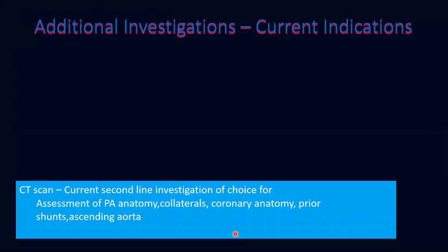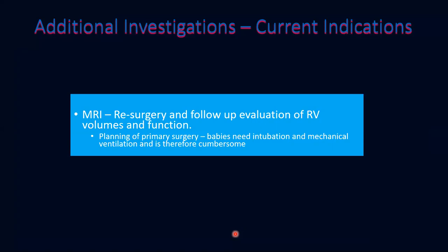CT is the current second-line investigation of choice. Any information not obtainable from echocardiography should be sought with CT. Indications for CT include assessment of pulmonary artery anatomy, looking for collaterals, coronary anatomy, prior shunts, and the ascending aorta. MRI is not preferred as a preoperative investigation for first-stage surgery because babies require intubation and mechanical ventilation. MRI is used when planning re-surgeries and for follow-up evaluation of right ventricular volumes and function, especially when planning pulmonary valve replacement.